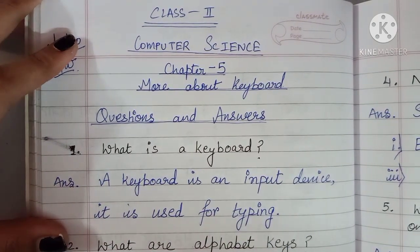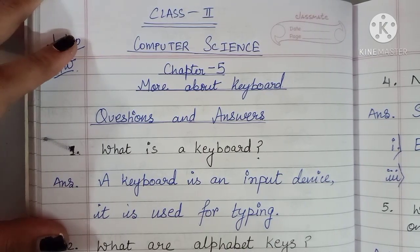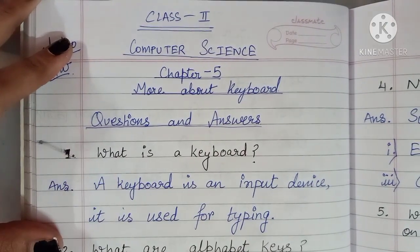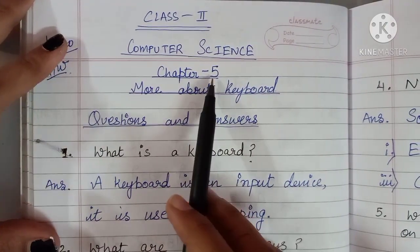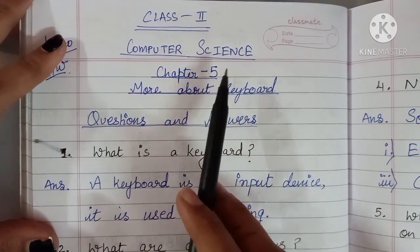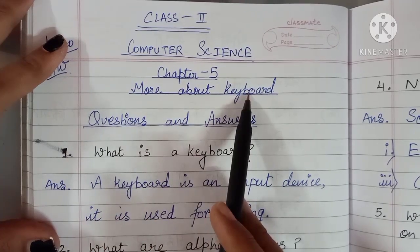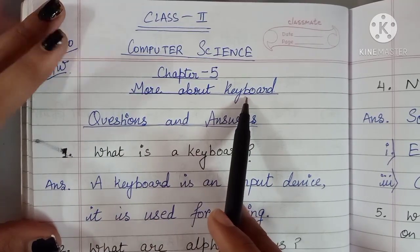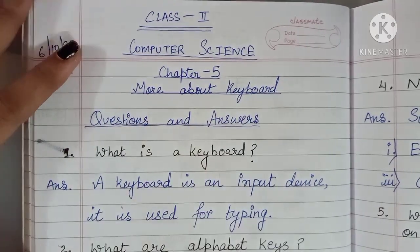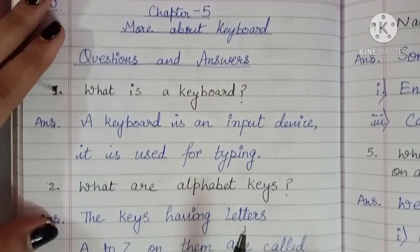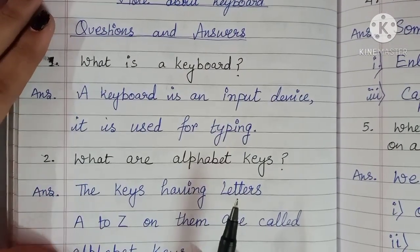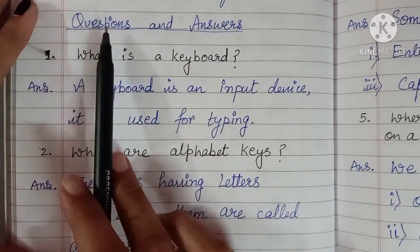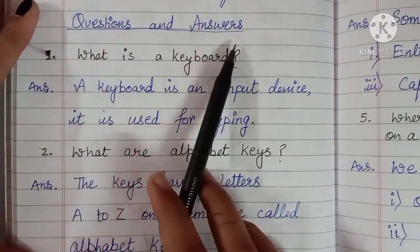As you can see on the screen, I have written a few questions and their answers. We have completed chapter number five, more about keyboard — the explanation and some short questions. Now we are going to do some theoretical questions and answers.